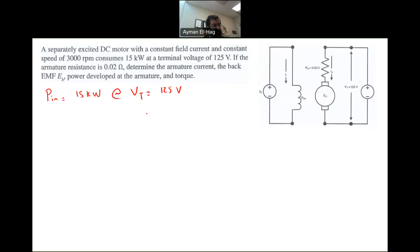We are given the armature resistance. We want to find the following: armature current, back EMF, power developed at the armature, and the torque developed at the armature as well.